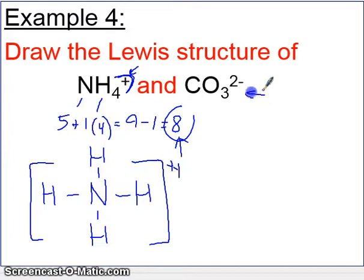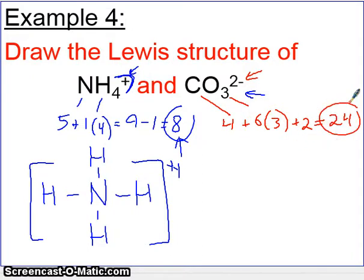Let's also do CO3 2-. Carbon brings four. Each oxygen brings six. There are three oxygens, so six times three. Since we have two more electrons, we're going to add two, because the minus two charge means we have two extra electrons. This gives us 18 plus 2, which is 20, plus 4. We get 24 electrons available for bonding. Carbon goes in the middle. The three oxygens go on the outside.